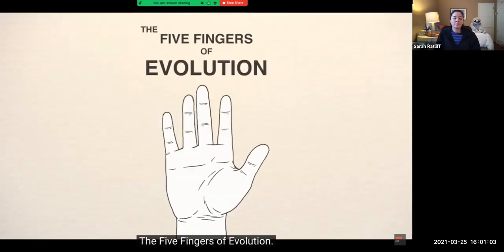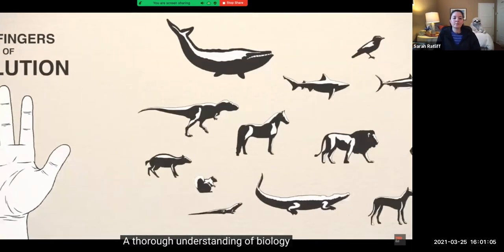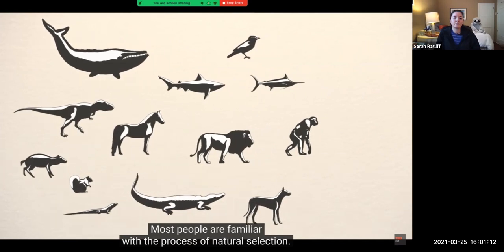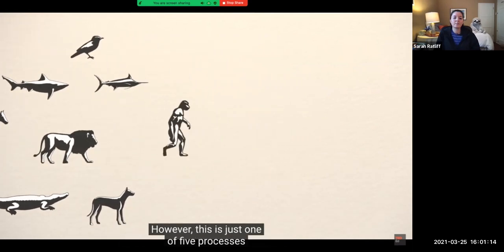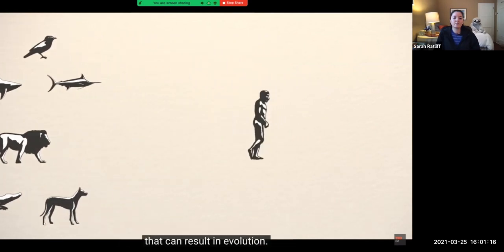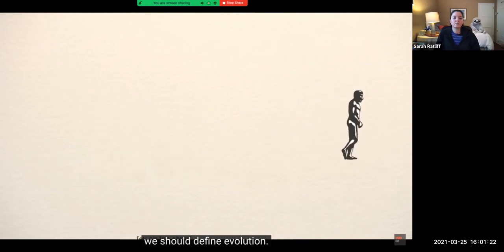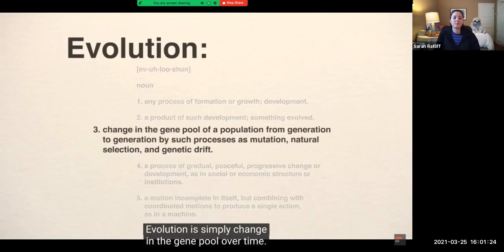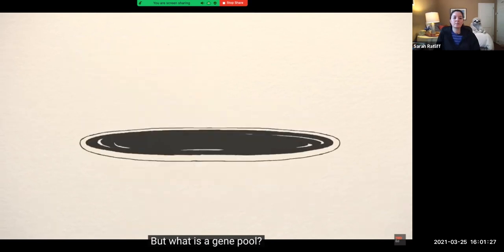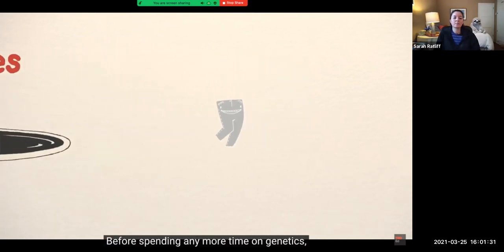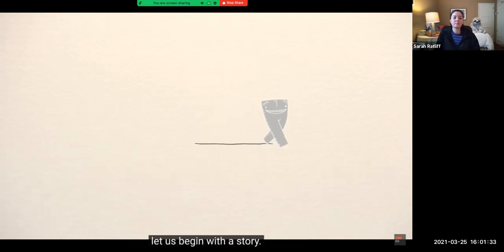The five fingers of evolution. A thorough understanding of biology requires a thorough understanding of the process of evolution. Most people are familiar with the process of natural selection. However, this is just one of five processes that can result in evolution. Before we discuss all five of these processes, we should define evolution. Evolution is simply change in the gene pool over time. But what is a gene pool? And for that matter, what is a gene? Before spending any more time on genetics, let us begin with a story.